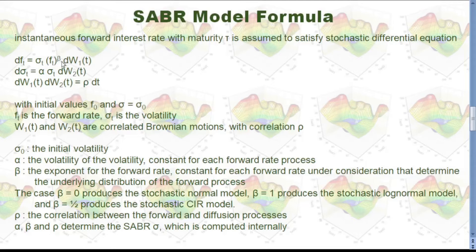There is another parameter beta here. Beta is the exponent for the forward rate. It's constant for each forward rate, and the consideration that determines the underlying distribution of the forward process. Beta can take value from 0 to 1.